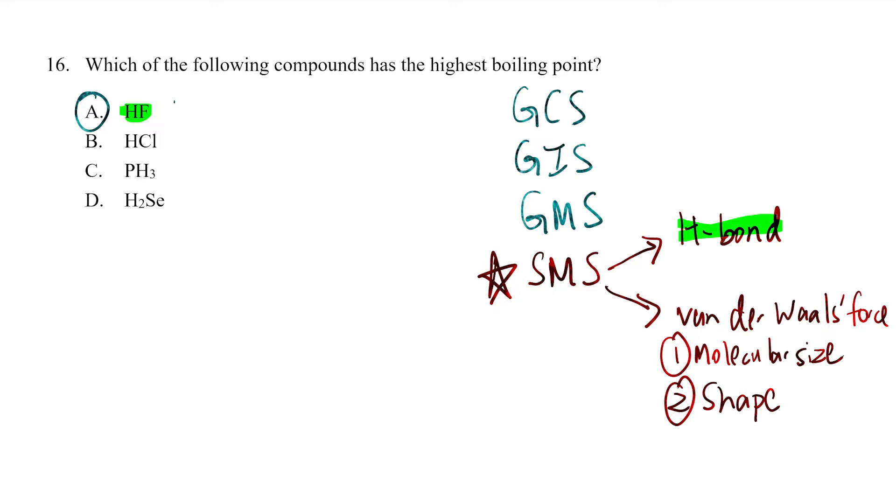So this is number one: HF. Then HCl, PH3, H2Se. Now we'll see their molecular size and shape. PH3 is actually the last one because phosphorus has 15 electrons.